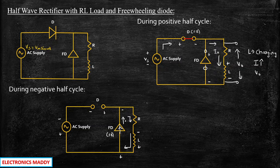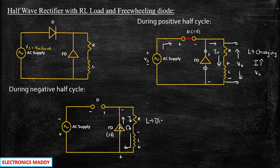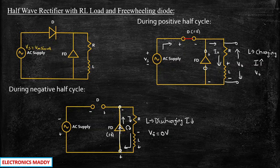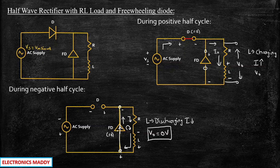The current flows through this path and whatever energy was stored in the inductor will be freewheeling — circulating within this loop. So the inductor is actually discharging, meaning the current i is decreasing. As for the output voltage, since the freewheeling diode path is a short circuit, the voltage measured between the output points will be zero. So vout equals zero volts during the negative half cycle — a very important observation for analyzing the waveforms and understanding the importance of the freewheeling diode.